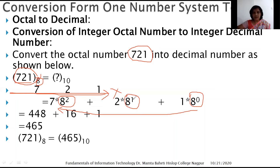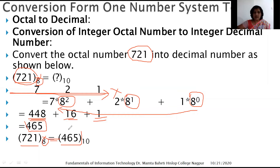Assign 8⁰ to 1, 8¹ to 2, and 8² to 7. Any number raised to the power 0 gives 1, so 1 × 1 = 1. 8¹ = 8, and 8 × 2 = 16. 8² = 64, and 64 × 7 = 448. Adding 1 + 16 + 448 gives 465. So (721)₈ = (465)₁₀.